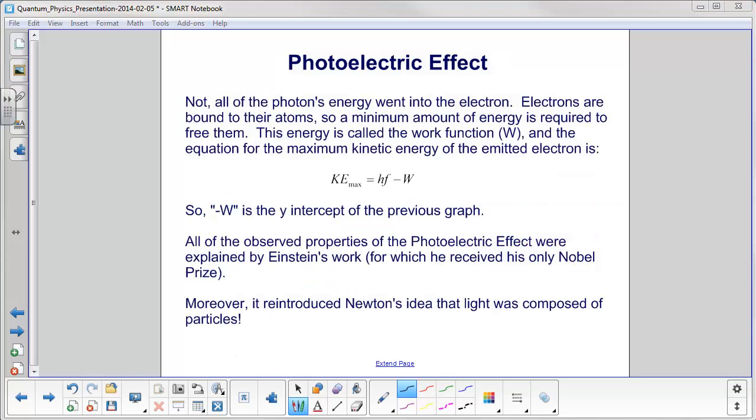It means that not all of the photon's energy went into providing kinetic energy to the electron. Electrons are bound to their atoms in the metal. Remember, we've got the light incident upon a metal. So a minimum amount of energy is required to free them. We call this energy the work function.